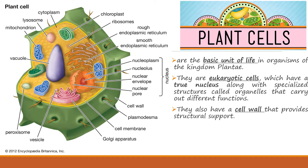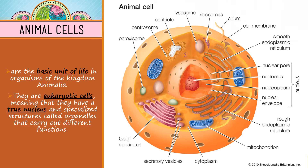These are the organelles found inside the plant cells. Animal cells are considered as the basic unit of life in all forms of organisms in the entire kingdom Animalia. They are also considered as eukaryotic cells, meaning they have a true nucleus and specialized structures called organelles that carry out different functions. As you look at it, plant cells and animal cells have the same organelles, but take note, there are parts or organelles in the plant cells that are not seen in the animal cells.